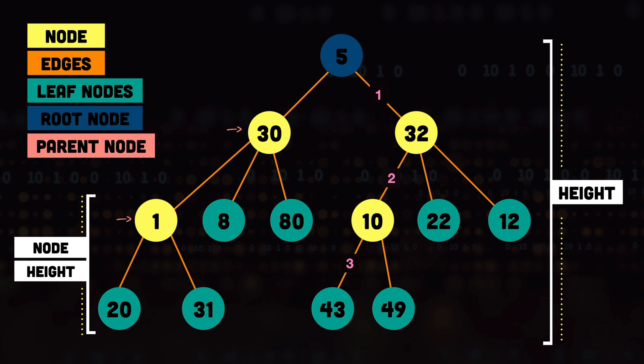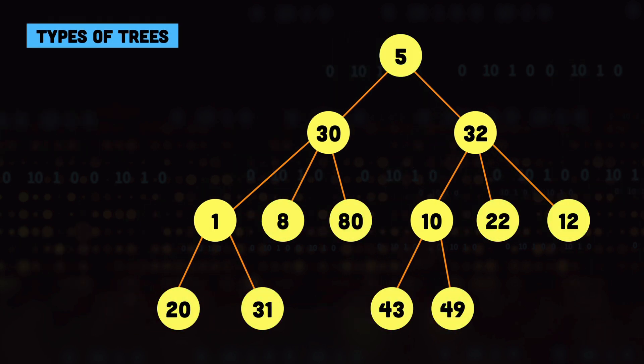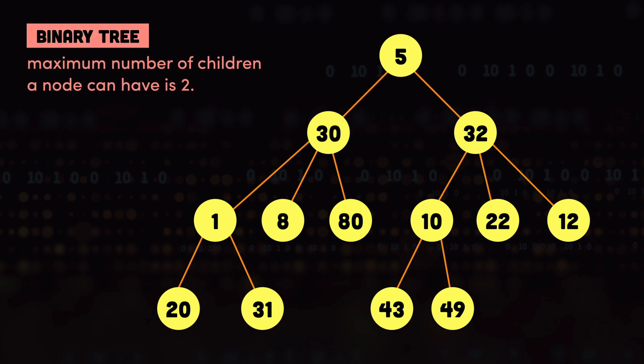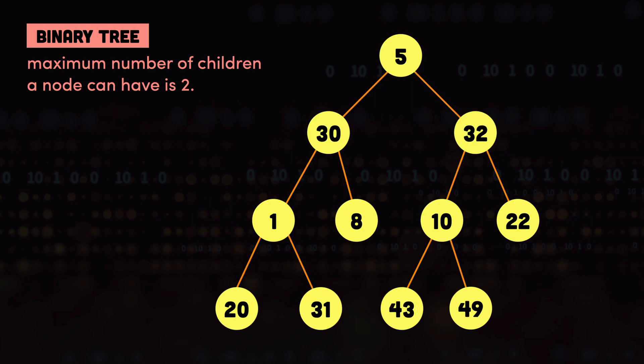Now that we know what trees are and the different terminologies, let's look at the different types of trees. In this video we will only be covering the binary tree and the binary search tree. A binary tree is a type of tree in which the maximum number of children a node can have is 2. For example, this tree is not a binary tree because nodes 30 and 32 each have 3 children. If we remove those 2 nodes, we have a binary tree because no node has more than 2 children.